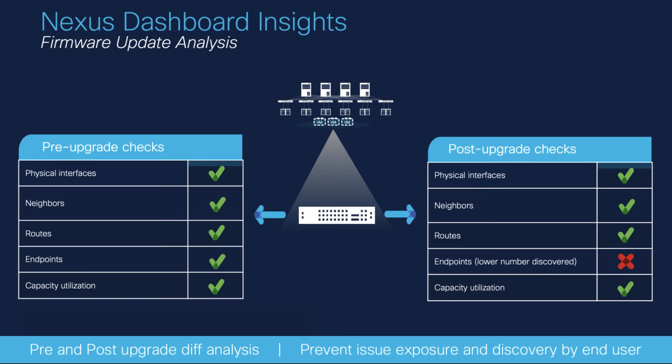The Firmware Update Analysis feature suggests an upgrade path to a recommended software version and determines the potential impact of the upgrade. It also helps with the pre-upgrade and post-upgrade validation checks. With this feature, you can take the guesswork out and know which critical parameters are not backed up to the expected functional level. This is useful to prevent issue exposure and discovery by the end user.